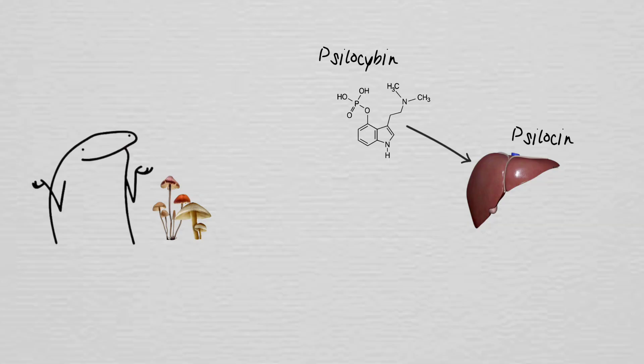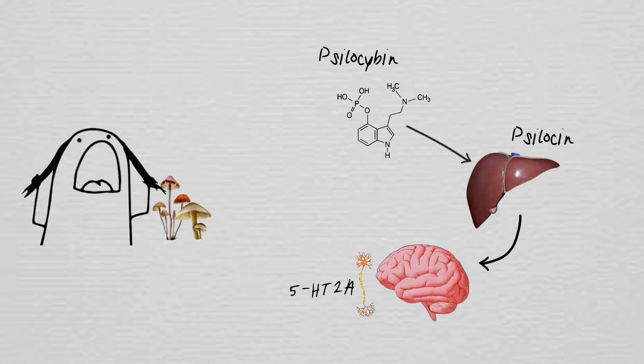Your body actually converts it into psilocin, which then rushes to your brain and starts messing with your serotonin receptors, especially one called 5-HT2A. That's the switch that flips your reality upside down.